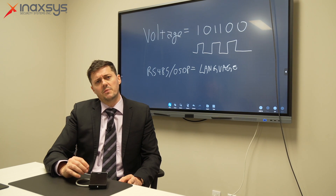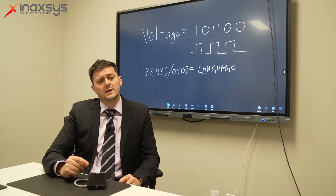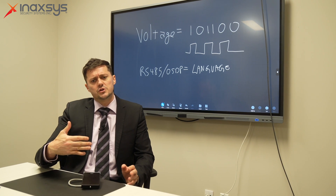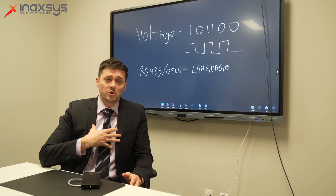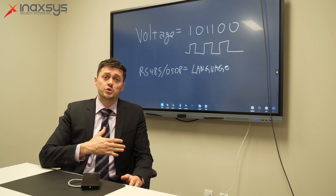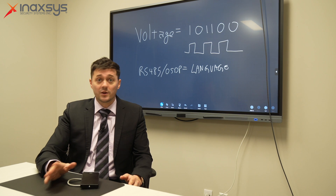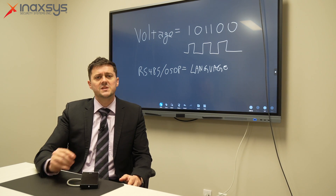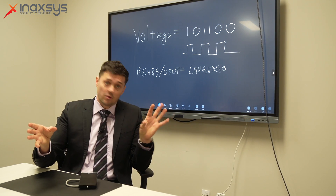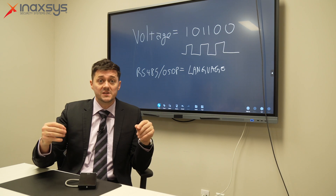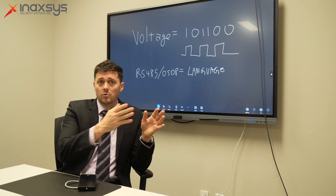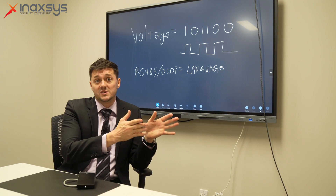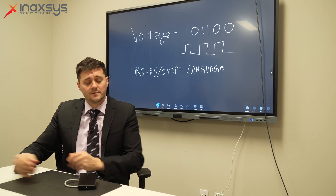First I'd like to talk about Wiegand. Whether to choose one or the other, my personal opinion is you should always encrypt your data. What is the difference between Wiegand and OSDP or RS-485? It's simple: RS-485 or OSDP is encrypted. Wiegand is not.